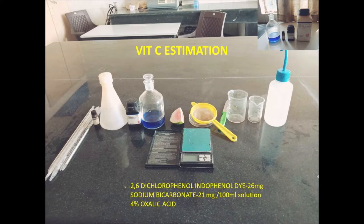We should measure the volume of the dye used for titrating the 0.5 ml sample and calculate the vitamin C content. In the same way, we should compare this dye with standard vitamin C. We should prepare standard vitamin C, which means ascorbic acid, simultaneously.